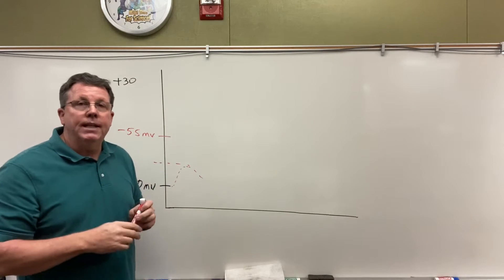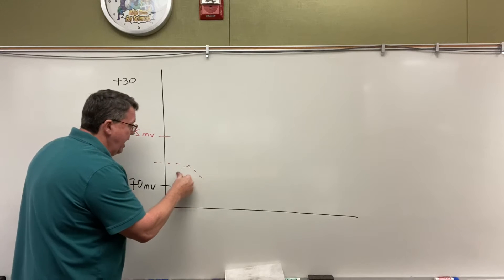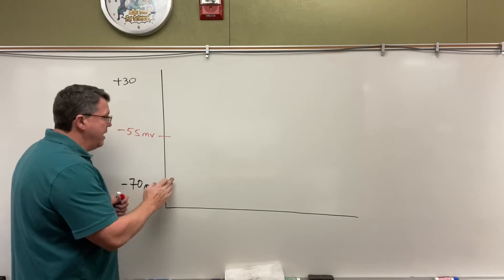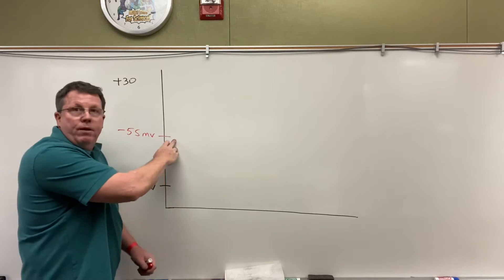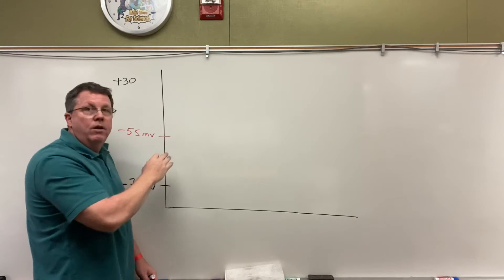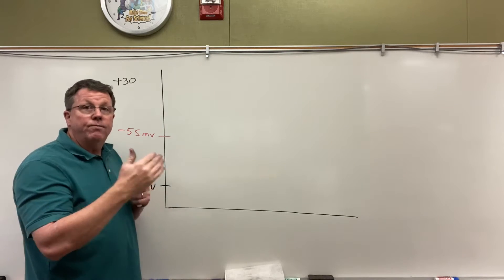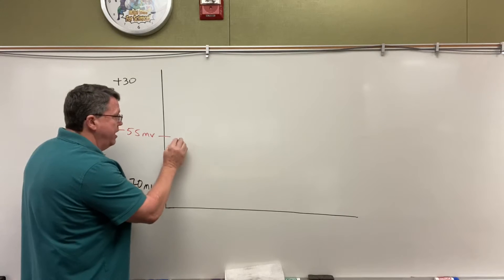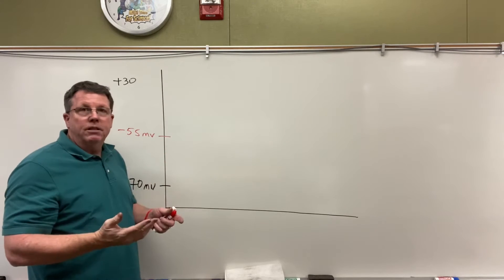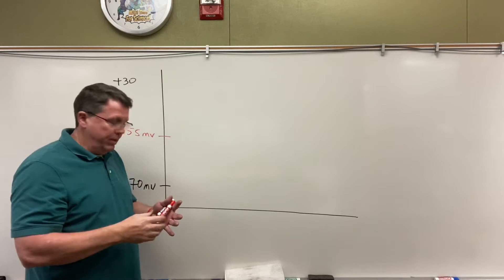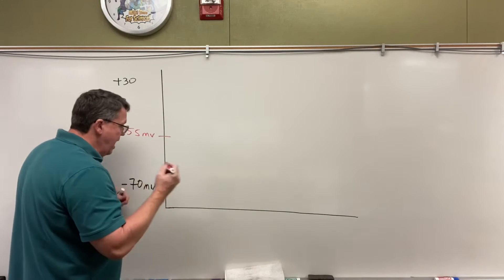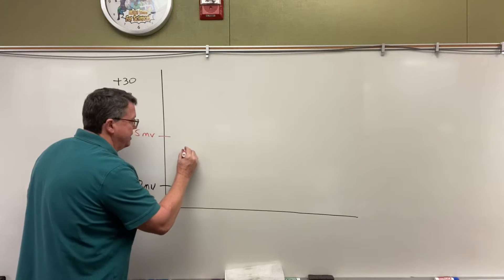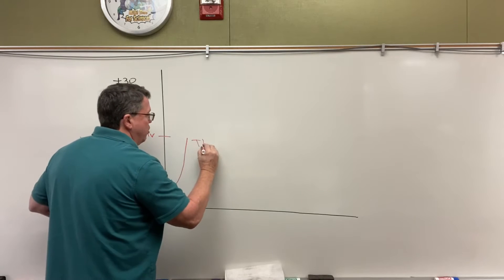Now two things can happen here. I can either have a stimulus that goes all the way up to threshold real quick — strong enough to get all the way up there — or I could have something that's sustained for a long enough period of time that it adds up and gets up to threshold, basically causing the action potential. So we're having sodium gates open here, and it drives the voltage up. Now we've reached our threshold potential.